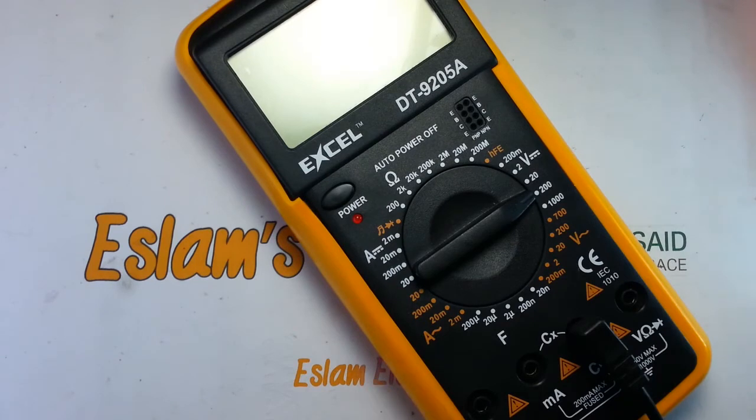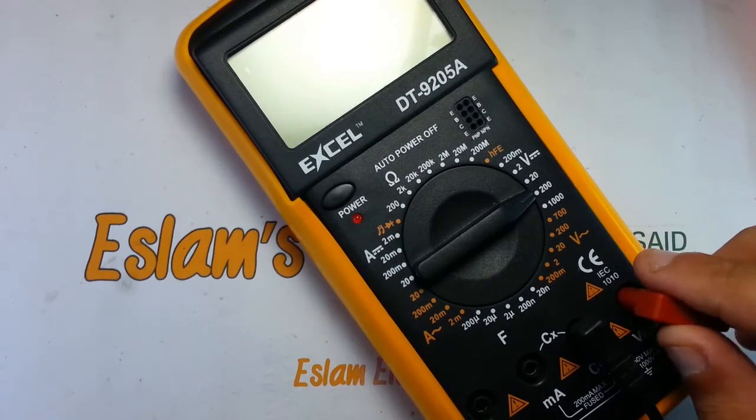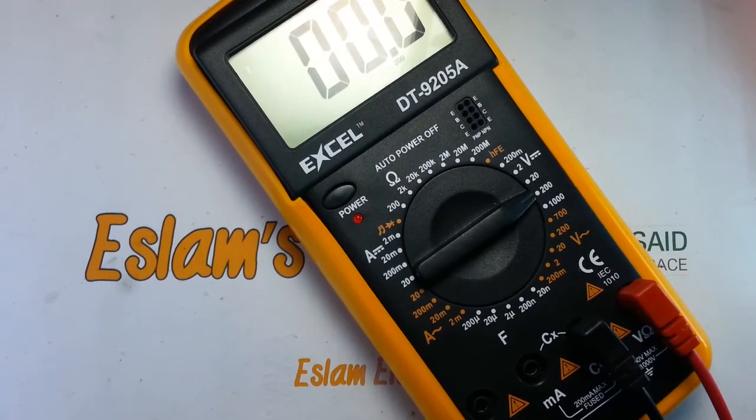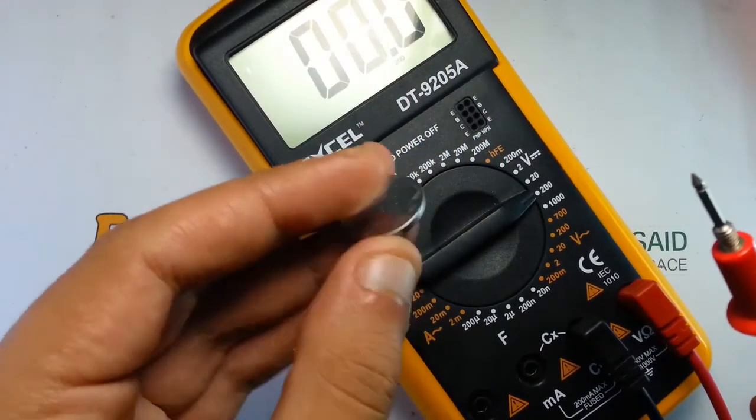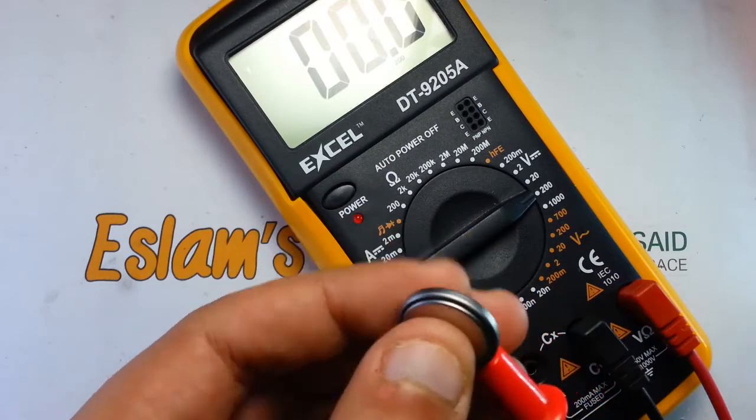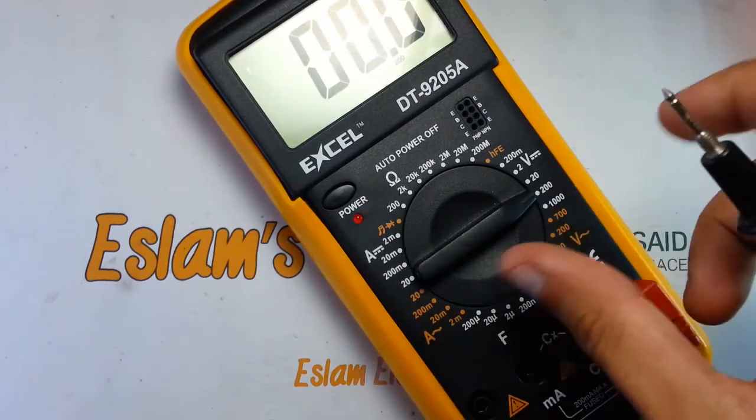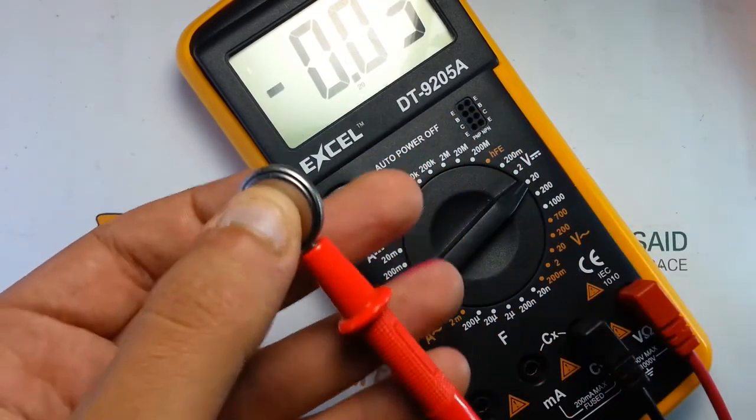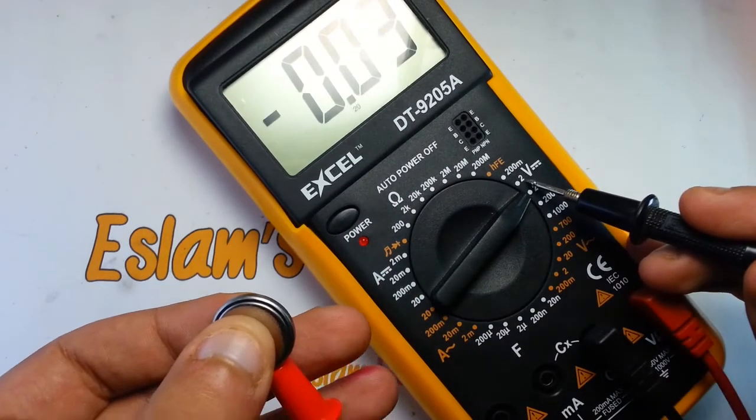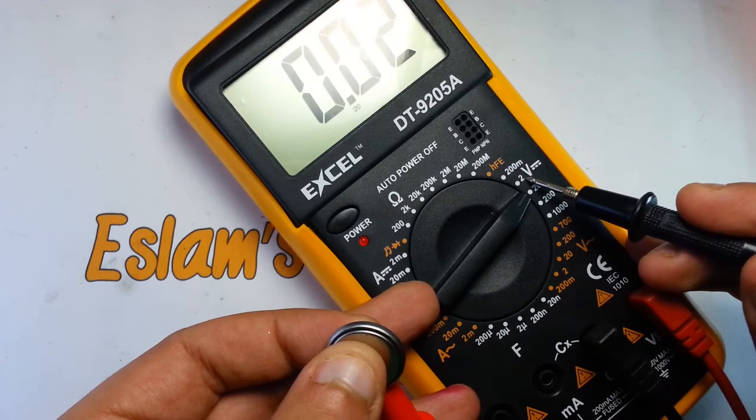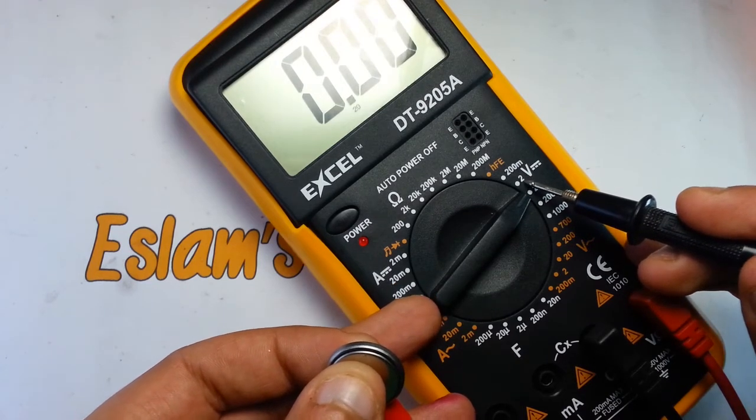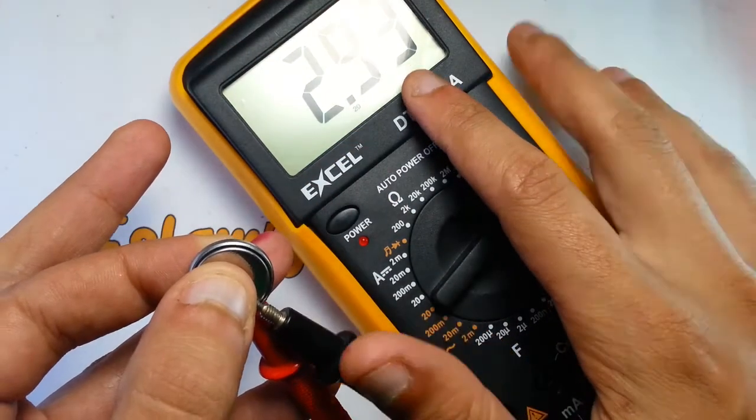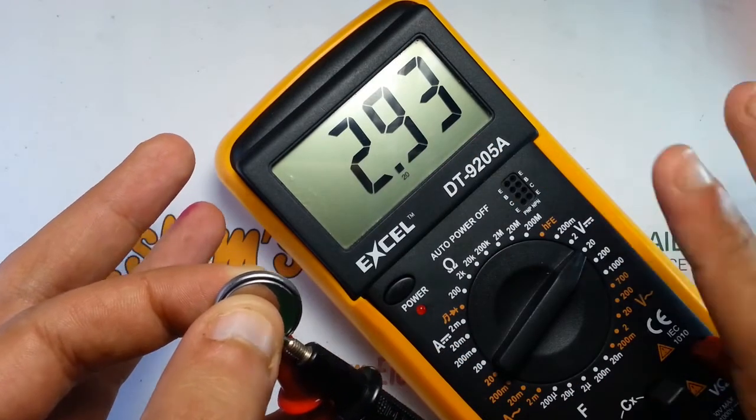So now if I want to measure voltage, what should I do? By connecting the red lead at the connector marked with the voltage symbol and move the cursor to DC voltage. Actually, this is a three-volt battery, so I have to move the cursor to a value higher than three. So here I select 20 voltage scale, and we can see the readings here.